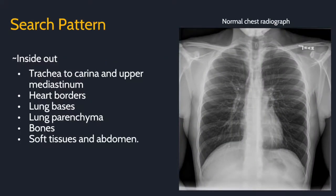There are many different approaches for a search pattern, but here is my approach. I generally start inside out with the carina as one of my main landmarks. Look at the trachea to the carina and upper mediastinum. Then I look at the heart size and the borders. I move to the lung bases and move up to the right lung, down the left lung, and then look at both lungs at the same time. Finally, I look at the bones, soft tissue, and the abdomen.